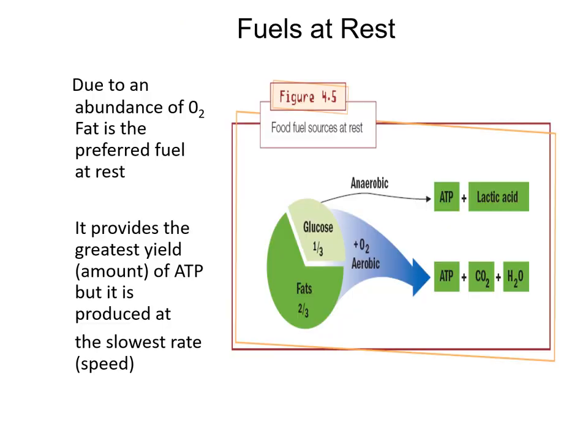Looking at the body's use of fuels at rest, we introduce the concept of interplay — how the energy systems relate. This slide focuses on fuels within predominantly the aerobic system, with anaerobic systems also contributing due to interplay. In short: when the body has ample oxygen, like at rest or at a very low percentage of max heart rate, it prefers to use fats because fat has a much higher ATP yield than glucose. At rest, about two-thirds of fuel for ATP resynthesis comes from fats.